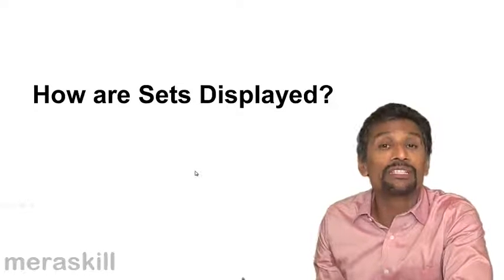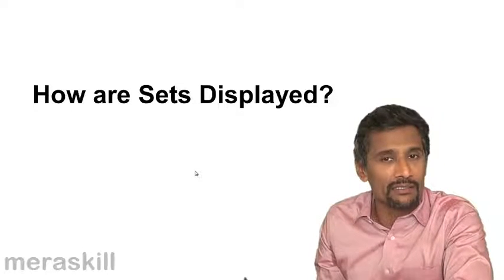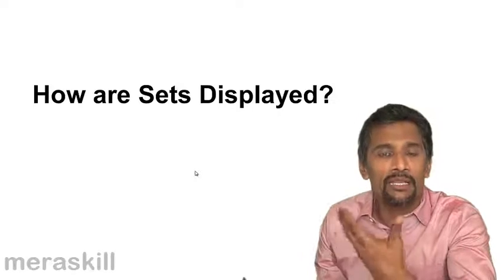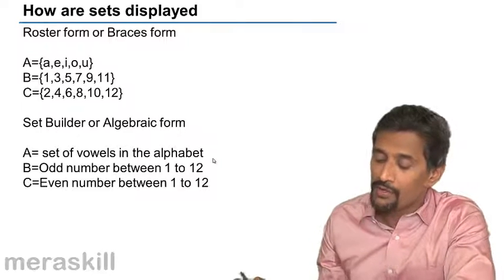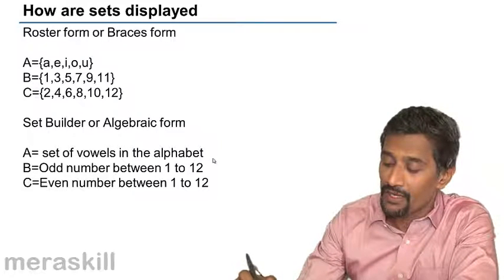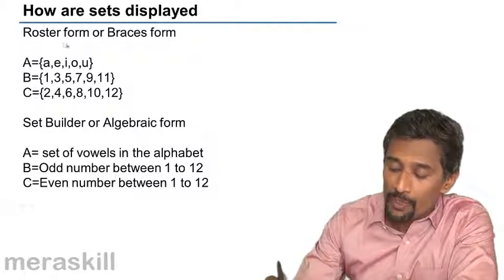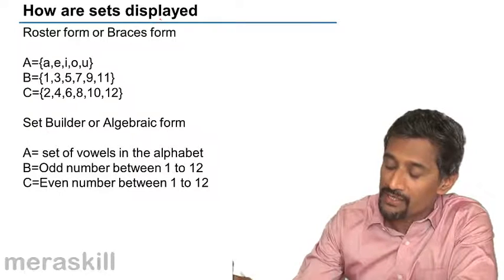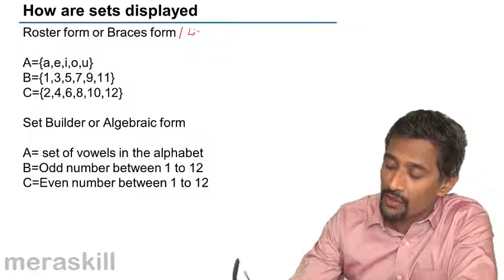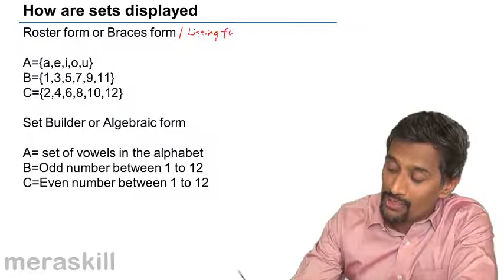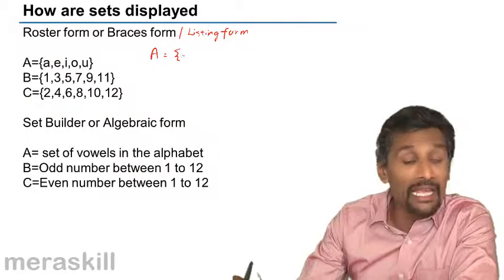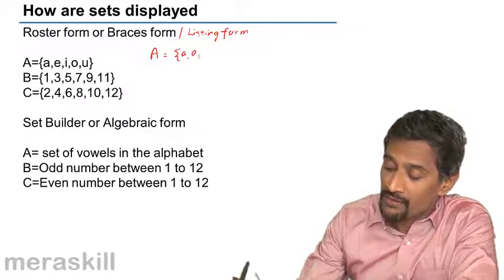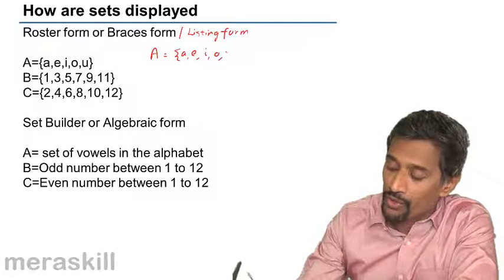There are two ways to display sets. The first is the roster form, which is also called the basis form or the listing form. In this form, you write the name of the set, say A, and then list the elements one after the other: A, E, I, O, U.